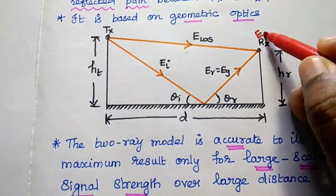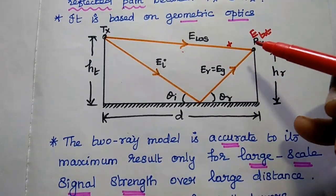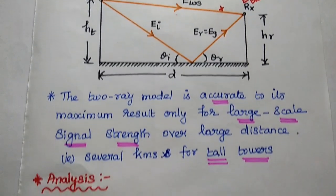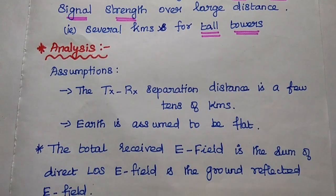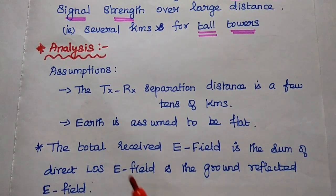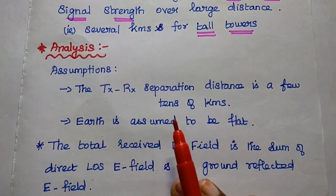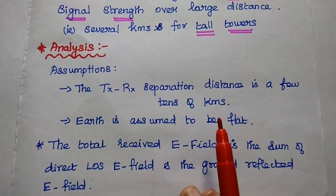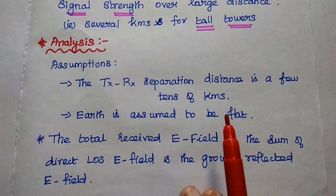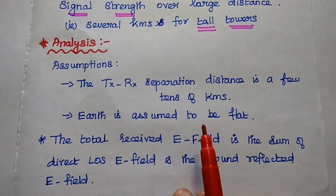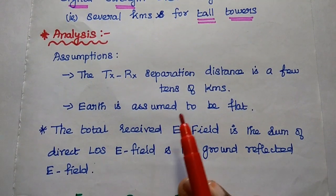At this point, the total electric field is equal to the line-of-sight field plus the ground reflected electric field. Next, we are going to analyze this 2-ray propagation model to get the received signal strength. For that, we make the following assumptions: the first assumption is that the transmitter-receiver separation distance is a few tens of kilometers. In the practical case, it is on the order of hundreds of kilometers. The second assumption is that the earth is assumed to be flat.